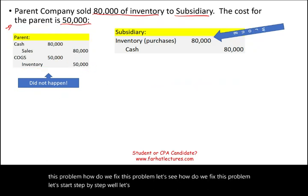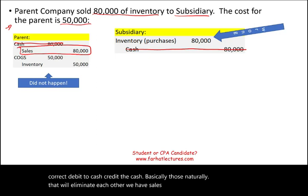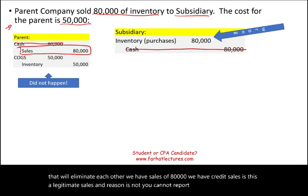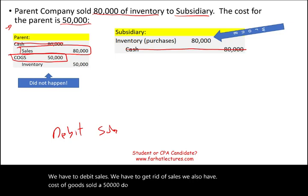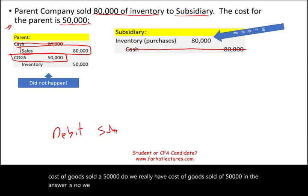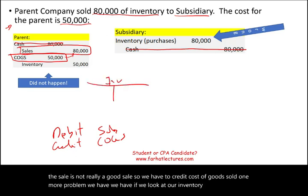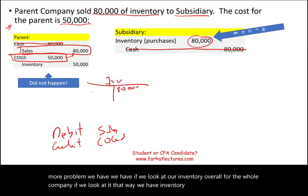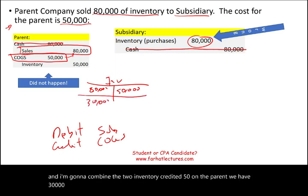The debit and credit to cash naturally eliminate each other. We have credit sales of $80,000 — this is not legitimate; you cannot report this sale on consolidation, so we debit sales to get rid of it. We also have cost of goods sold of $50,000 — this was related to the sale, which isn't a real sale, so we credit cost of goods sold to eliminate it. Now, looking at inventory overall for the whole company, we have an inventory debit of $80 on the sub and a credit of $50 on the parent — leaving $30,000 in excess inventory.